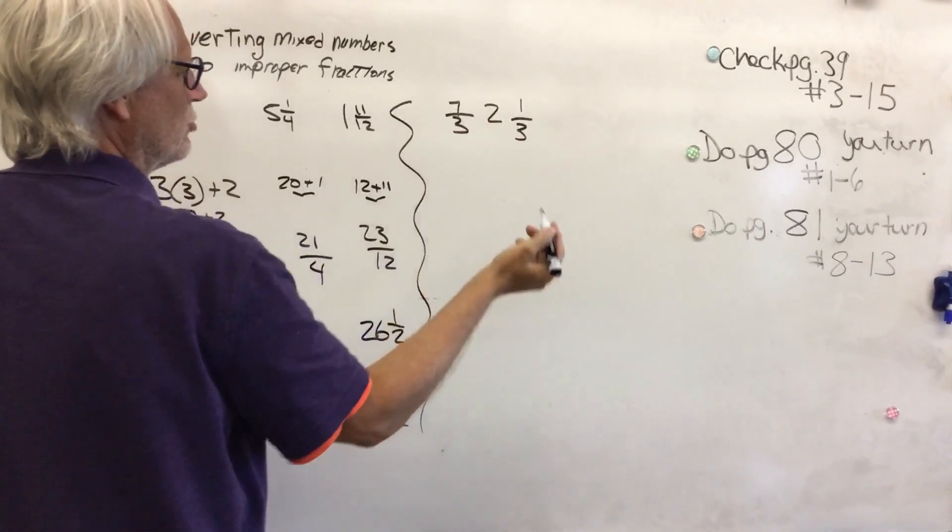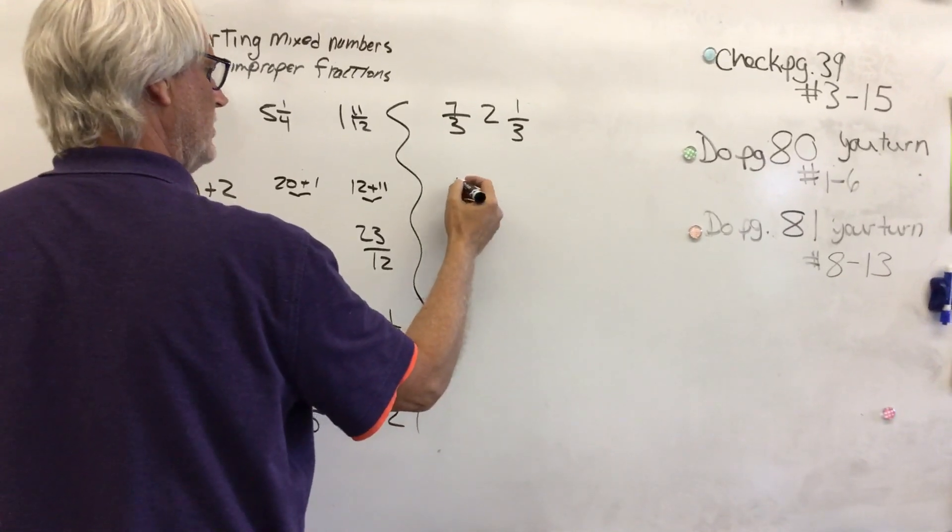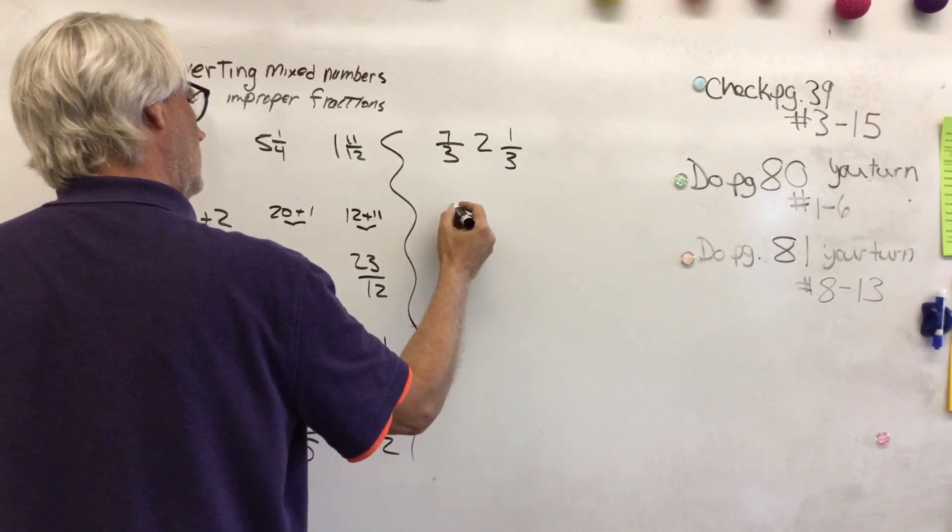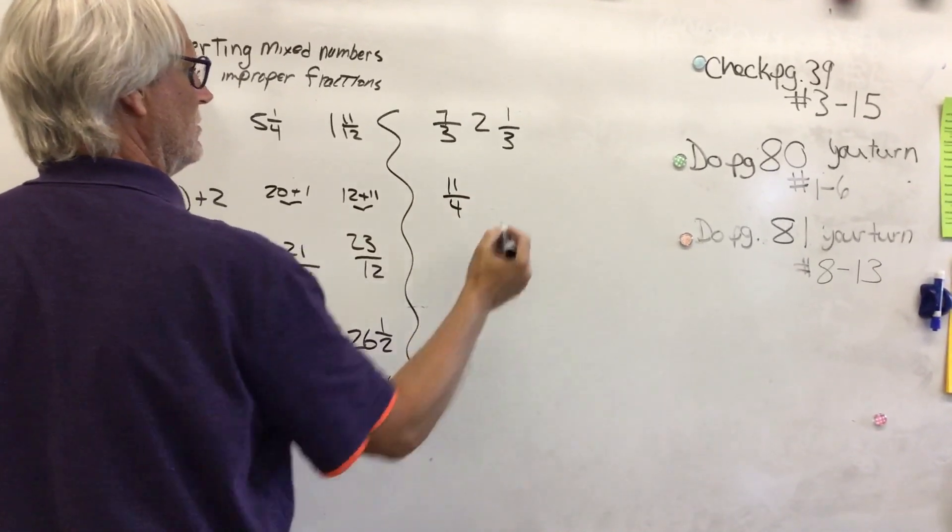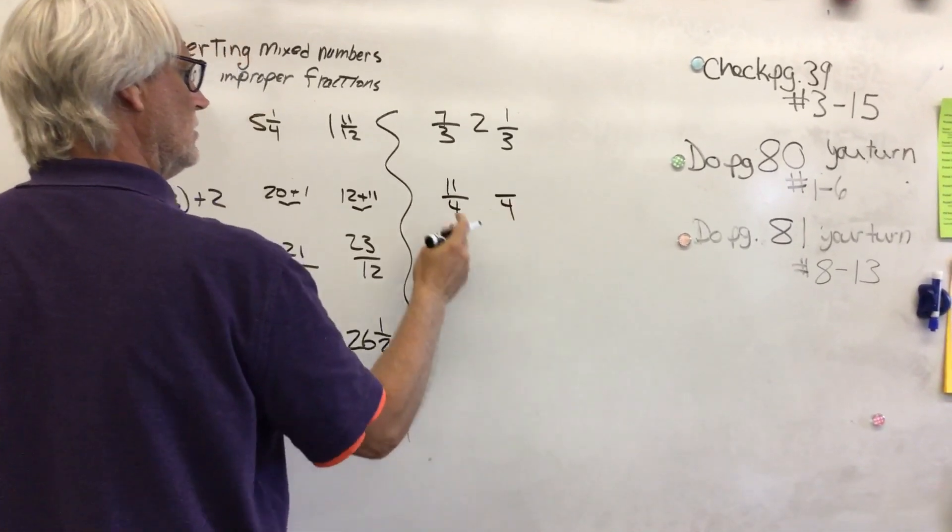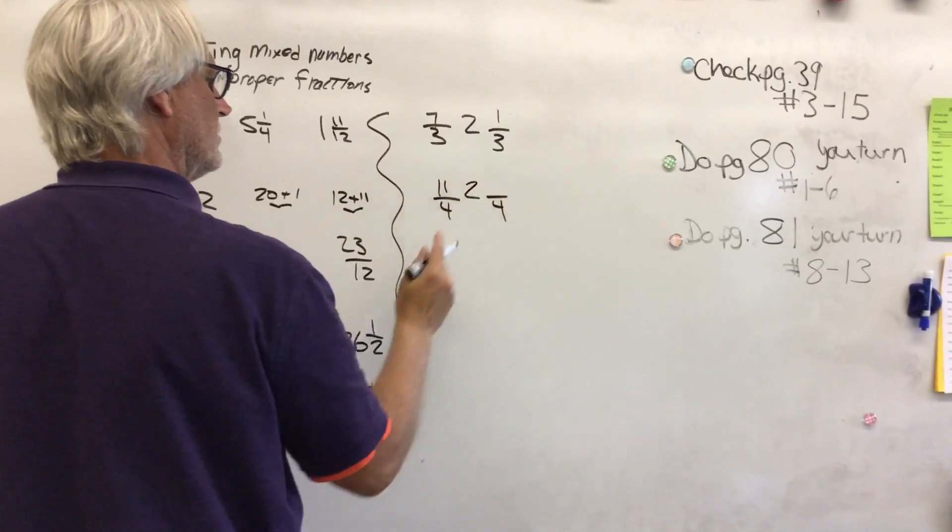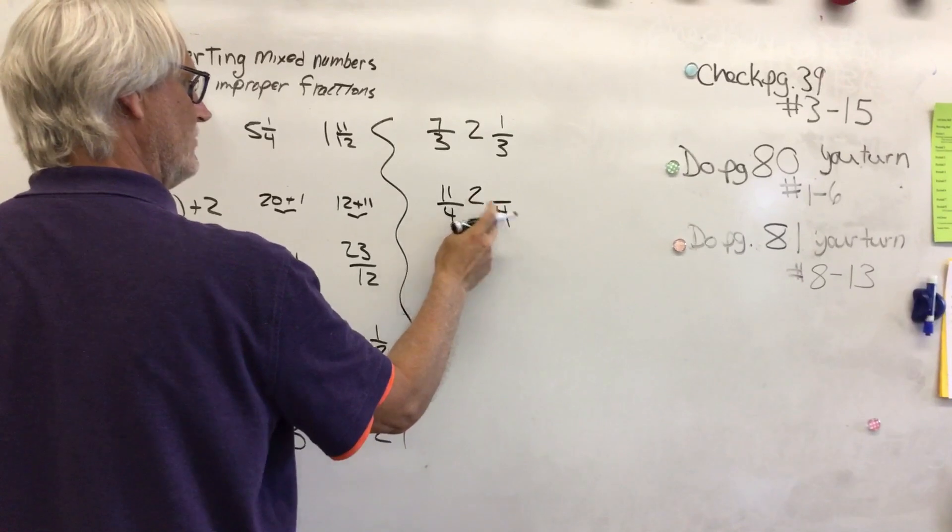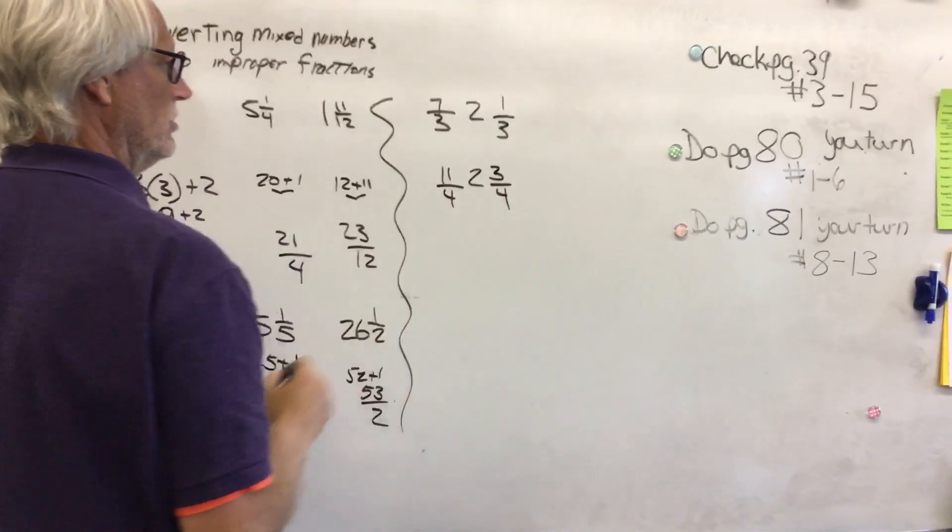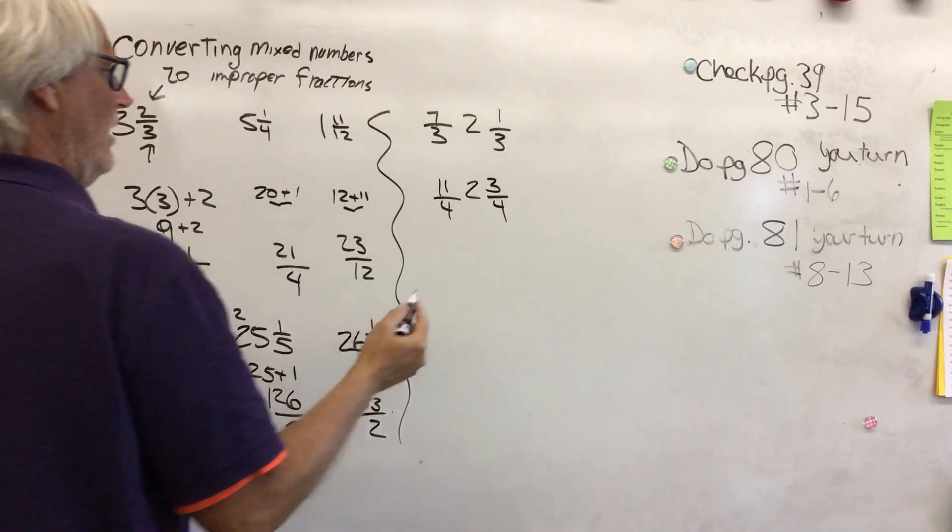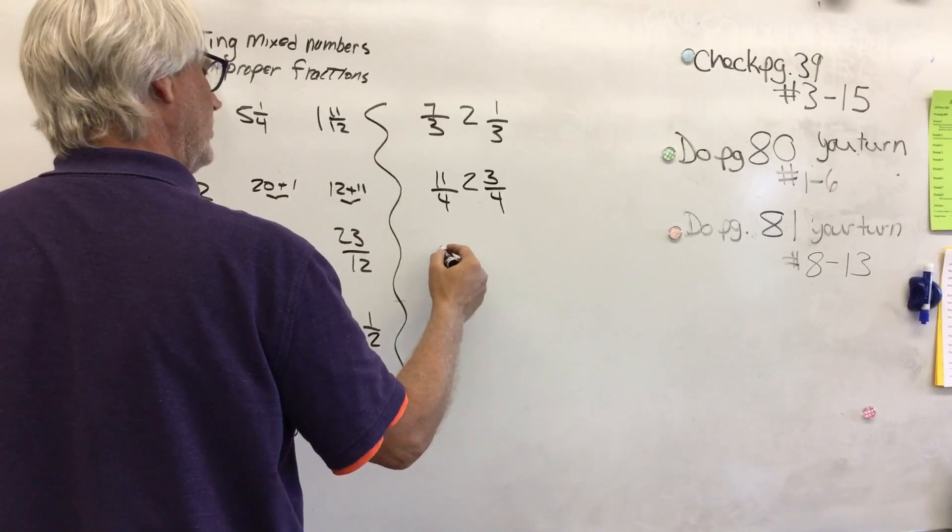And that works really nice when you're doing this kind of setup. So let's try a couple more. Let's do 11 fourths. So I have 4. So 4 goes into 11 two times, which is 8. 4 times 2 is 8. And then how many more to get to 11? 3 more to get to 11.